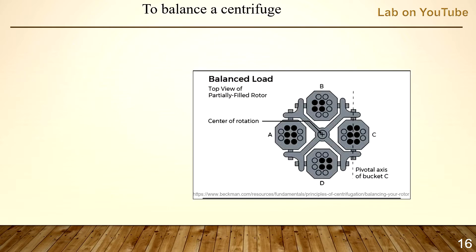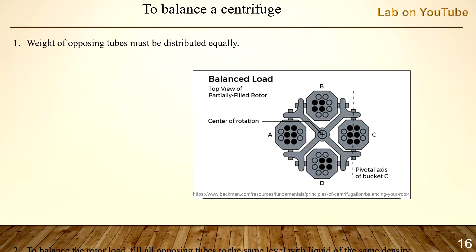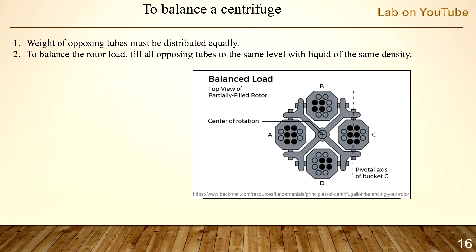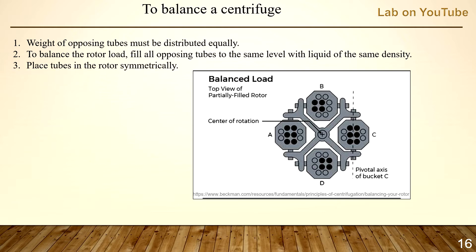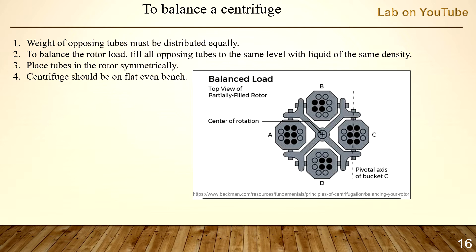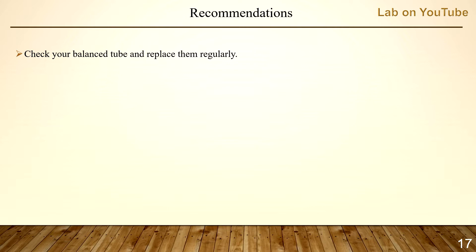To balance a centrifuge: first, weight of opposing tubes must be distributed equally. Second, to balance the rotor load, fill all opposing tubes to the same level with liquid of the same density. Third, place tubes in the rotor symmetrically. Fourth, the centrifuge should be on a flat, even bench. As a recommendation, check your balance tubes regularly and replace them after a certain number of spins.